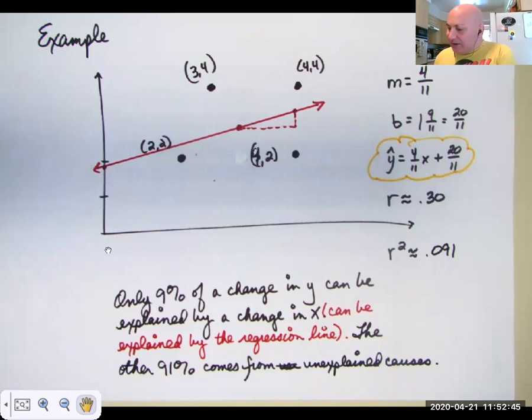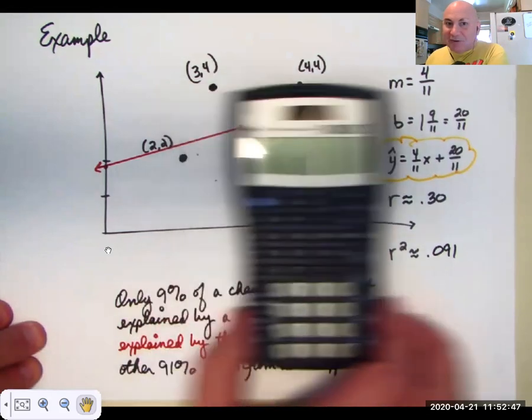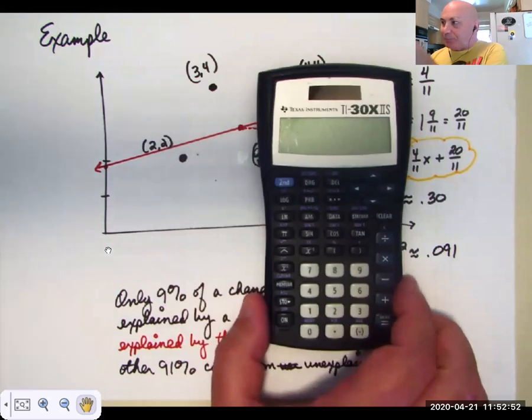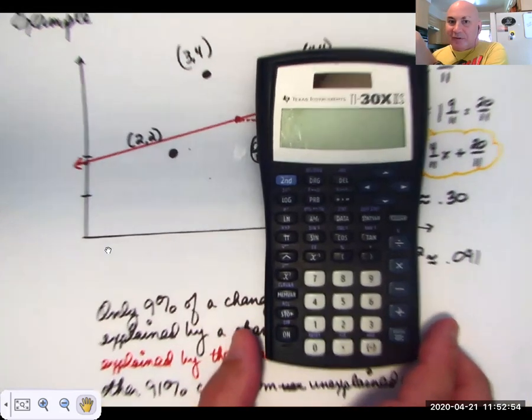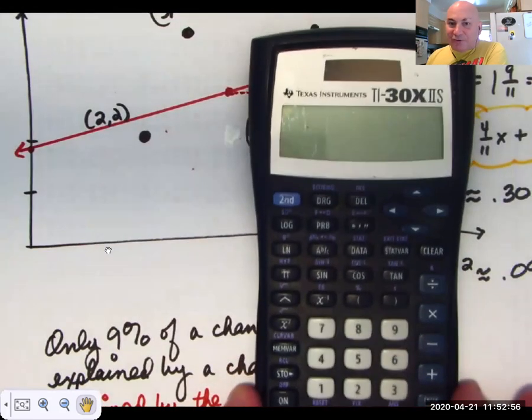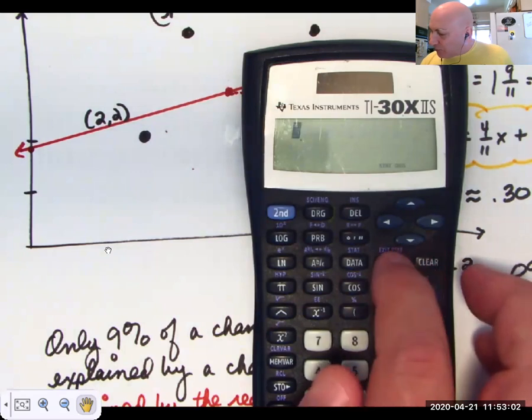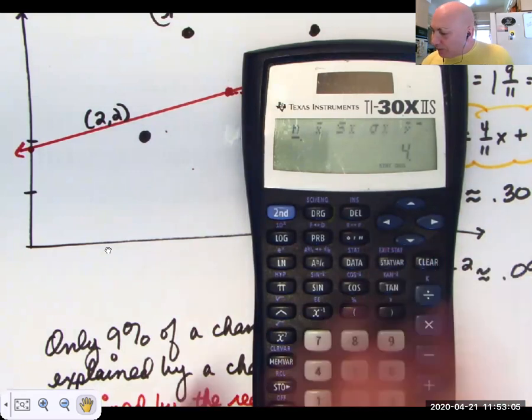So let's see from my TI-30 here what that's telling us, and then we'll confirm that r is approximately 0.3. I've taken the liberty for the shortness of this video of already having put these data points into the calculator. And there's our four data points.